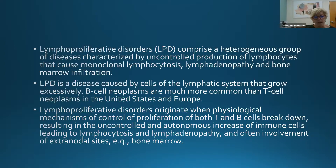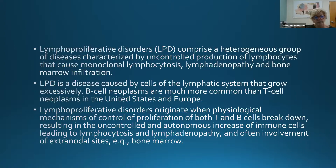We're going to discuss CLL, lymphoplasmacytic lymphoma — also called Waldenström's macroglobulinemia — prolymphocytic leukemia, mantle cell, follicular, marginal zone, and hairy cell. CLL and small lymphocytic lymphoma (SLL) are considered the same disease. We call it CLL when there is mostly a circulating population of abnormal cells, and SLL when most abnormal cells are confined to lymph nodes.